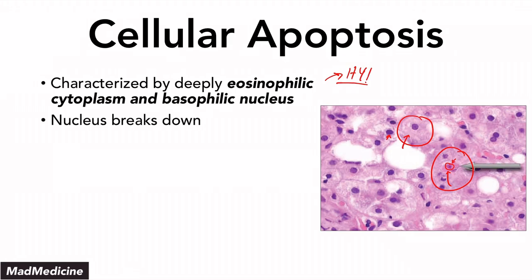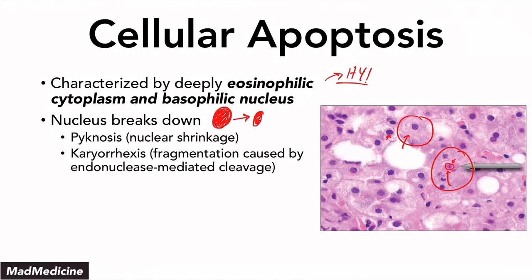In an apoptotic cell, the nucleus is going to shrink and break down through the classic hallmark process of nuclear shrinkage: pyknosis, karyorrhexis, and karyolysis. In pyknosis, the nucleus shrinks from a normal size to a smaller size. Then you go through karyorrhexis, where fragmentation occurs because of endonuclease-mediated cleavage. The nucleus fragments, and eventually you go through karyolysis, where the nucleus is completely degraded and no longer present. That is the process of nuclear breakdown.